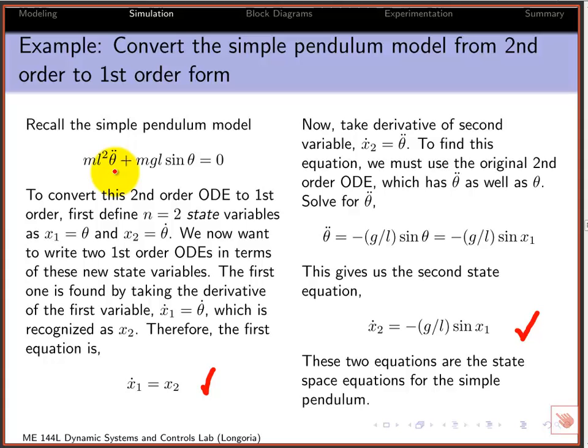You start off with the lowest order, and then you keep taking derivatives until as high as the order of the system. In this case, it's just two, so the second variable you define of interest is the velocity.